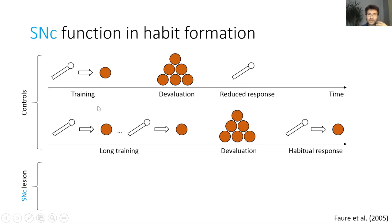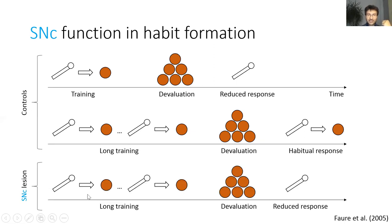Interestingly, if animals are trained for a very long time, then even after devaluation they press the lever even though they no longer desire the reward. This happens because they have learned that pressing the lever in this box is just the right thing to do in this state. After SNC lesion, animals are perhaps slightly slower in learning to press levers for reward, but eventually learn these tasks equally well as controls. But importantly, after devaluation, they no longer press the lever as much as controls. This suggests that SNC plays a critical role in habit formation.